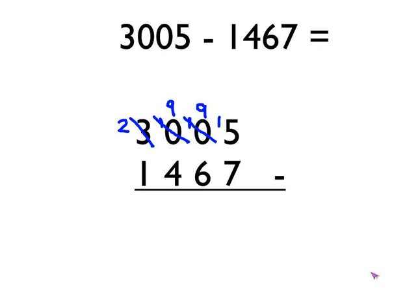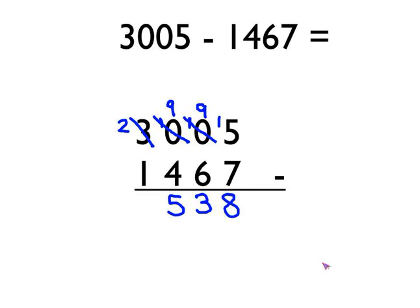Fifteen take away seven is eight. Then in the next column, nine take away six is three. In the next column, nine take away four is five. And then finally in the left hand column, two take away one is one. So we got to our answer: one thousand five hundred and thirty-eight.